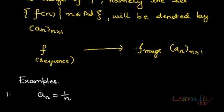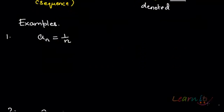Once you know what exactly a function is, sequences are functions. So f is a sequence and its image is denoted by a_n, n greater than or equal to 1. Here we will be looking at certain examples. If I say a_n is 1/n, now a_n is a sequence where n is greater than or equal to 1 and its general term is given as 1/n.